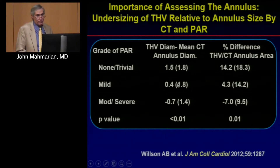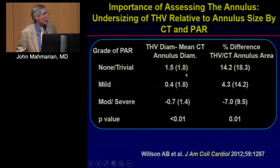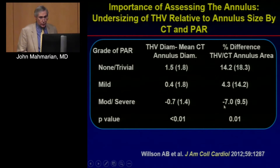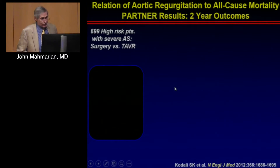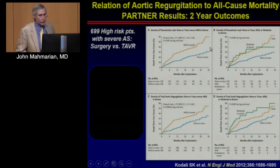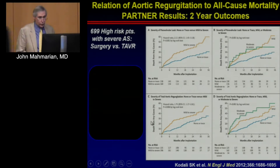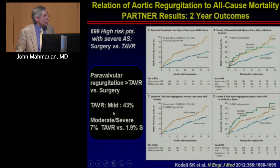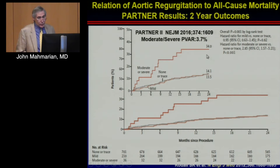Undersizing leads to moderate to severe regurgitation, which is critically important. From the original PARTNER data, when you look at paravalvular regurgitation — mild to severe versus none — there is a difference in outcomes. In the recent PARTNER CHU trial, moderate or severe regurgitation led to a very high event rate compared to none or mild. So it is essential to size these valves properly.